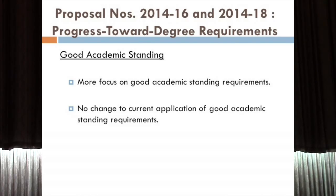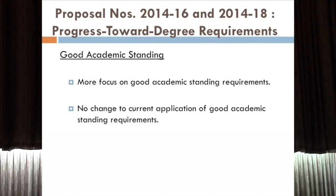The first item is actually not a change: academic standing is not changing. We're just moving it to a more prominent part of the manual to align with the progress toward degree legislation. What the task force heard is that institutions were not always tracking on the fact that if a student is not in good academic standing based on institutional policy for all students, that's where the analysis stops — you don't even look at NCAA legislation. Good academic standing is defined by your institution, not by the NCAA.